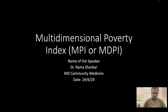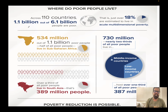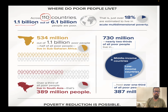Good evening everyone. Today I'll talk about the Multi-Dimensional Poverty Index, also called MPI or MDPI. The 2023 MDPI report has been published by UNDP, giving us a brief snapshot about poverty across the globe. We have data about 110 countries, and the report tells us that 1.1 billion out of 6.1 billion people are poor, which amounts to roughly around 18 percent.